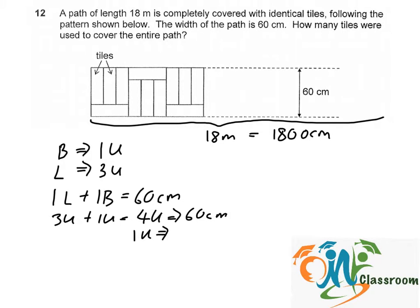One unit is 60 divided by 4, which is 15 cm. So the breadth of each rectangular tile is 15 cm, and the length will be 15 times 3, which is 45 cm.